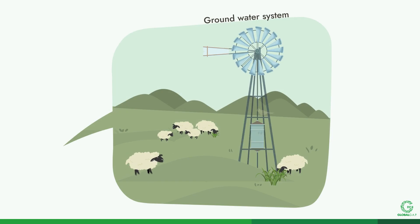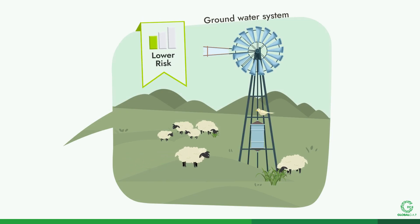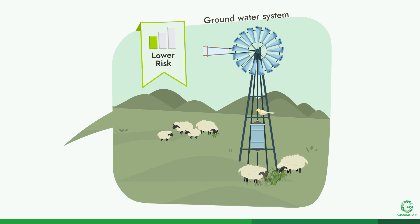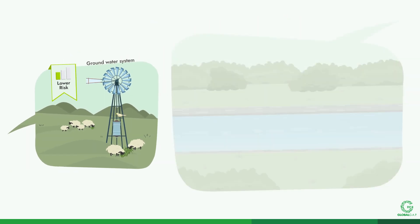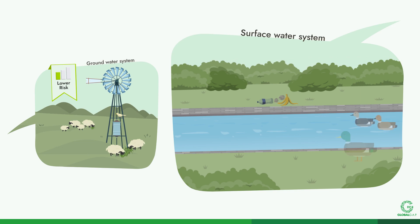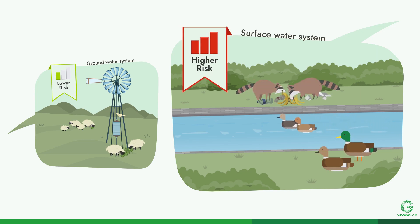Groundwater systems, like wells, may have a lower risk because they are enclosed and not accessible to animals and other contamination. Surface water systems may have a higher risk because open canals provide opportunities for contamination to enter the water supply.